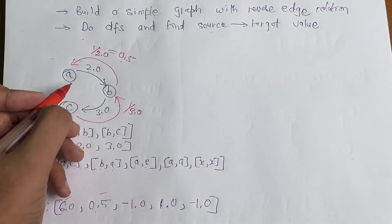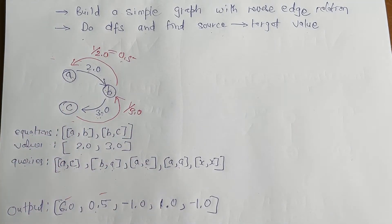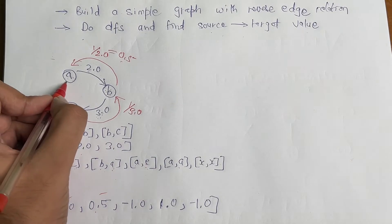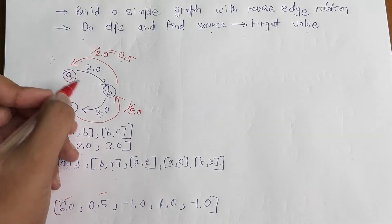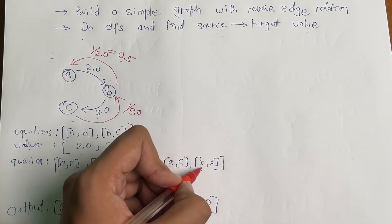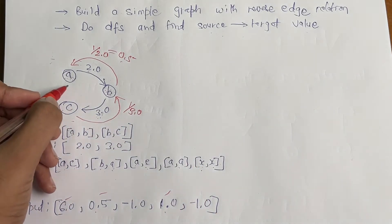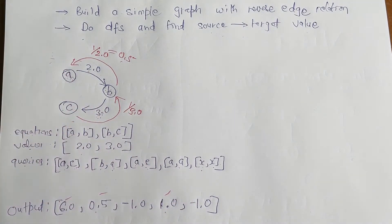For the query a→a, since source and target are the same, we start with 1.0 (the multiplicative identity) and immediately return that starting value of 1.0. For x→x, since x is not present in the graph at all, it will return -1. We will see in the code how this is handled.